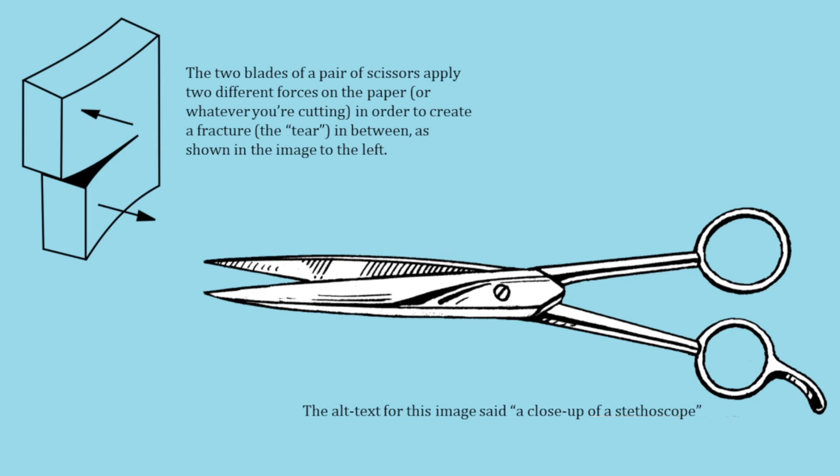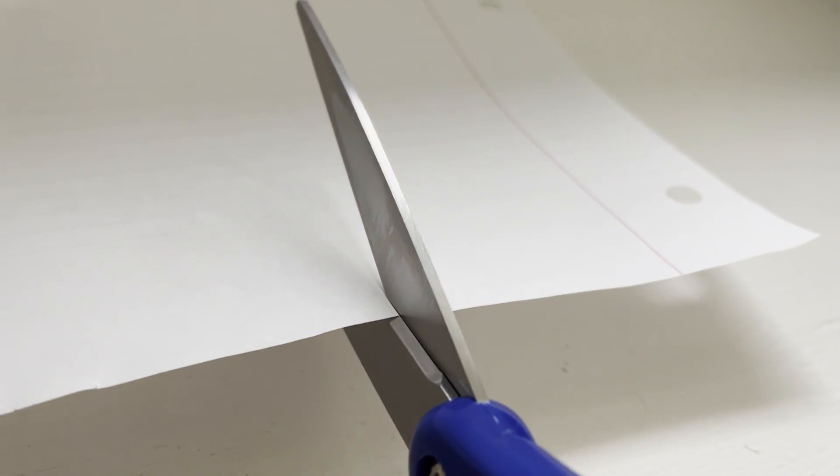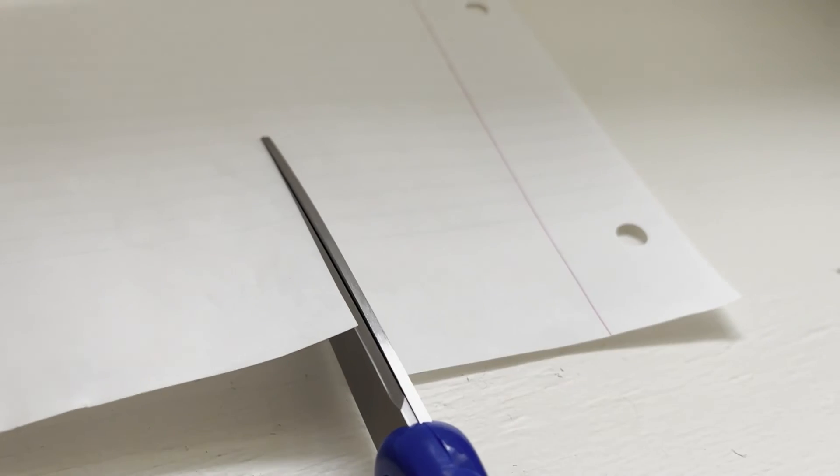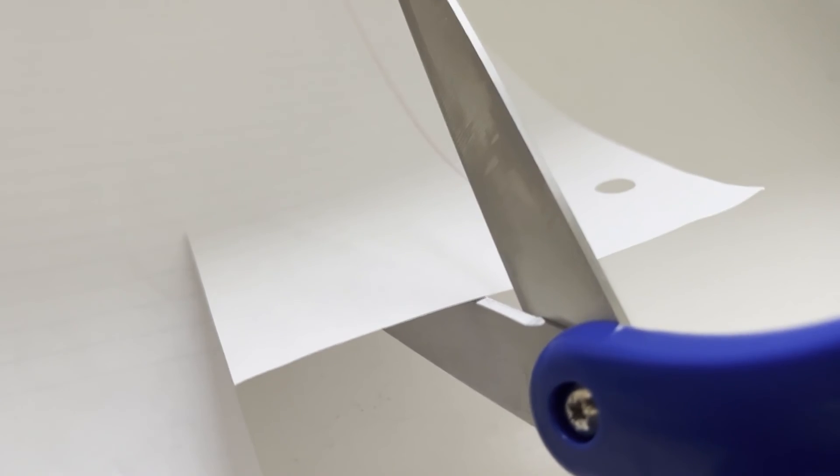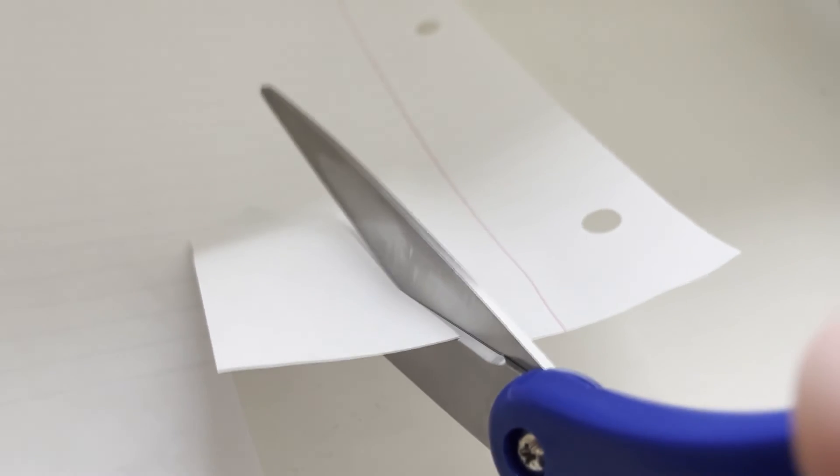When you cut a piece of paper, the blades are exerting two opposite forces, slightly apart from one another. These opposite forces cause the material to fracture, which is what we view as the paper tearing.